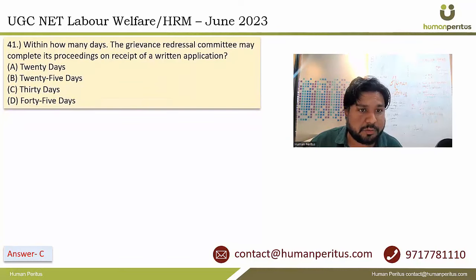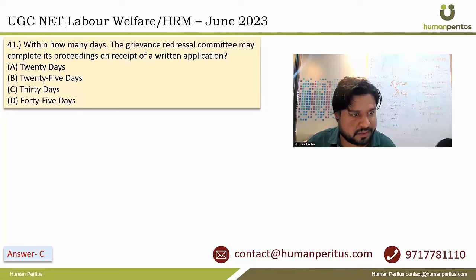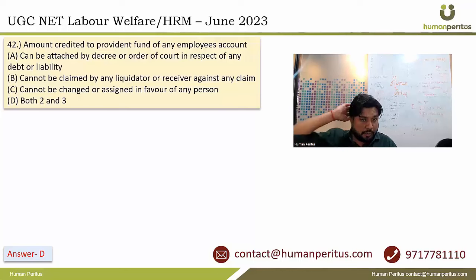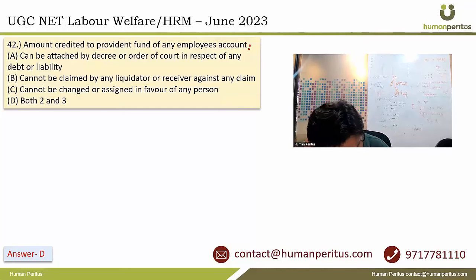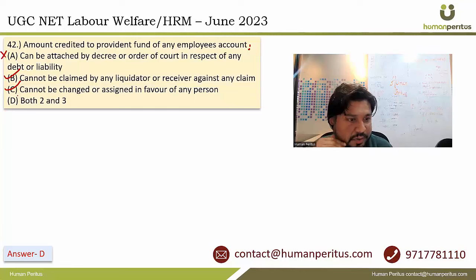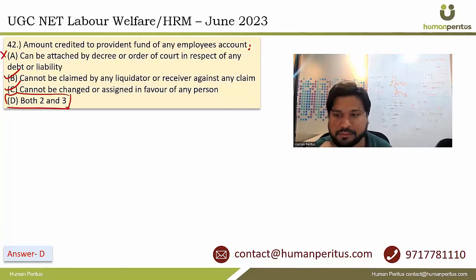Within how many days must the Grievance Redressal Committee complete its proceedings on receipt of a written application? It must be completed within 30 days. Regarding the Provident Fund, the amount credited to an employee's PF account cannot be claimed or assigned in favor of a person, so the correct answer is option D — both 2 and 3.